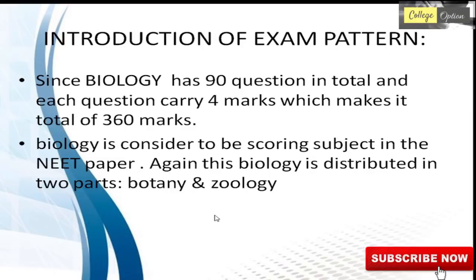If we talk about the exam pattern in biology, there are around 90 questions, which are in two parts: 45 questions in botany and 45 questions in zoology. Each question is 4 marks, so around 360 marks is the total biology section.